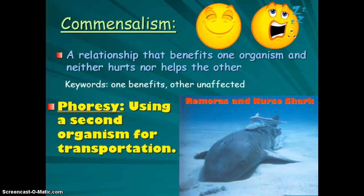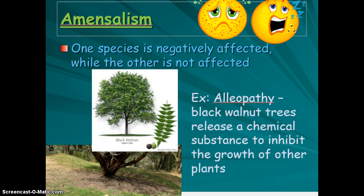Commensalism is where it benefits one organism but doesn't really do anything to the other — it doesn't help or hurt them. One example is phoresy, when one organism uses another for transportation. It's not hurting the nurse shark for remoras to latch onto it; it might be a little annoying, but not really bothering it much.